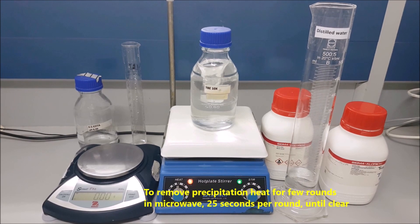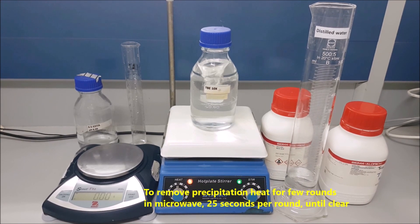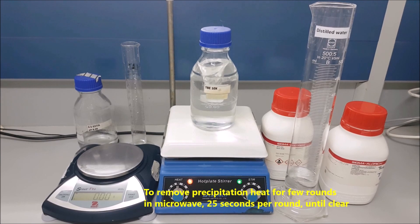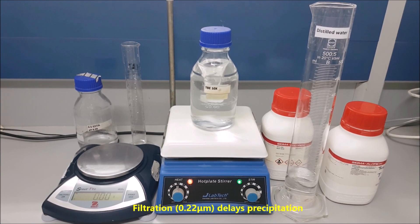To remove precipitation, heat for a few rounds in microwave, 25 seconds per round, until clear. Filtration delays precipitation.